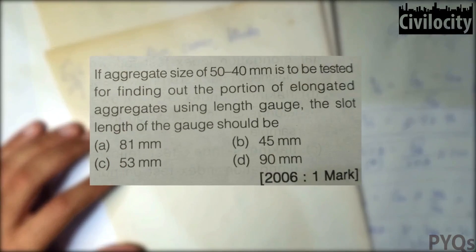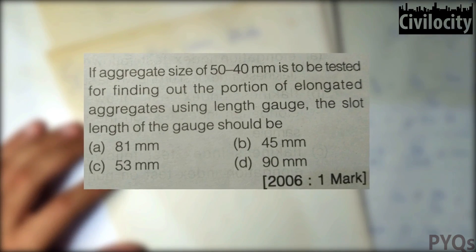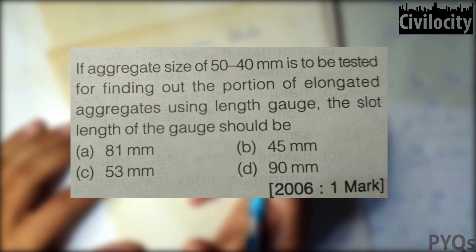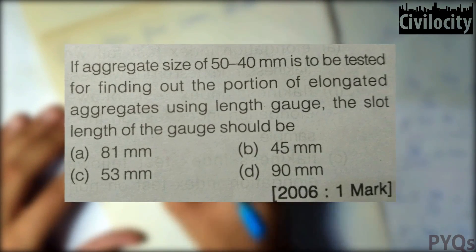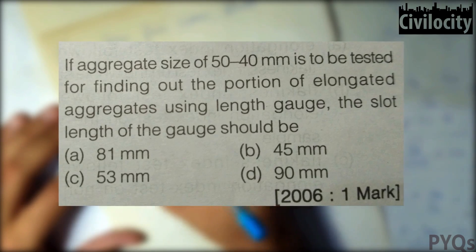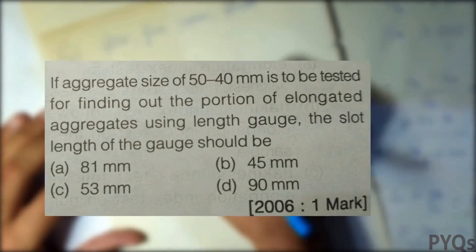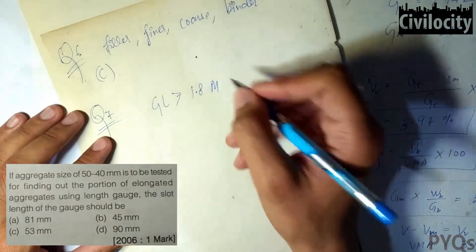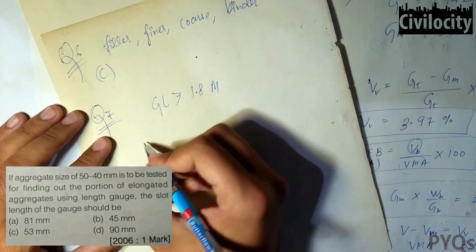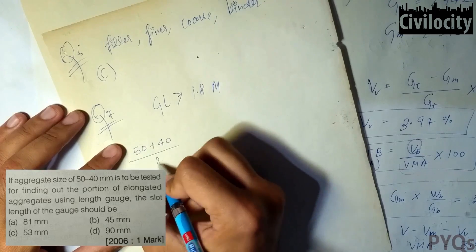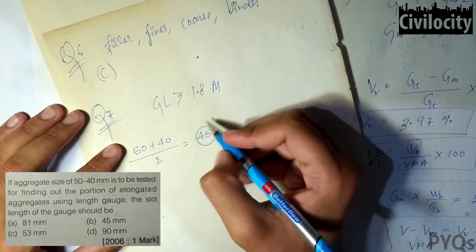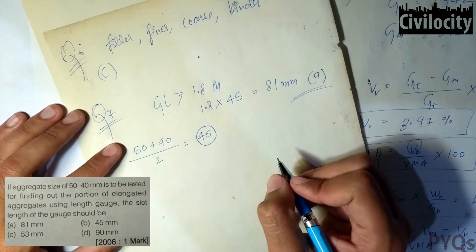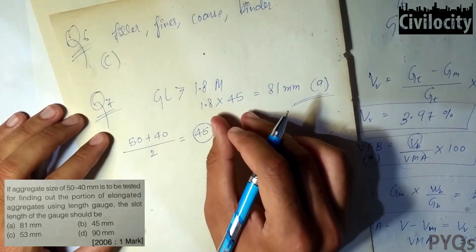Question seven: for an aggregate size of 50 to 40 mm tested for elongated aggregates using a length gauge, the slot length should be what? A particle is elongated if its greatest length is greater than 1.8 times its mean length. The mean size = (50 + 40) / 2 = 45 mm, so 1.8 into 45 = 81 mm.